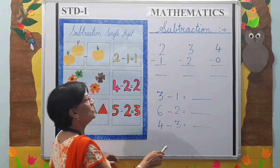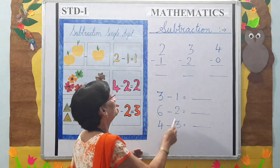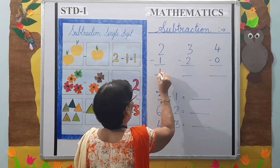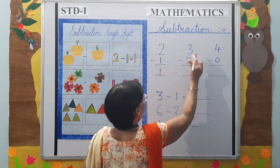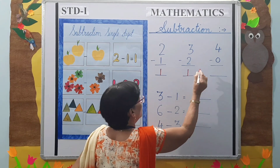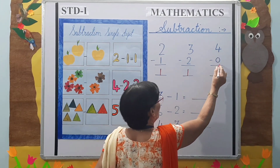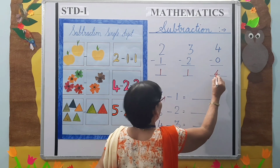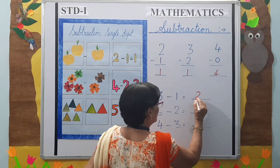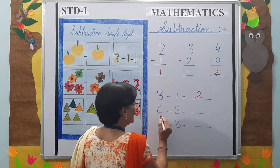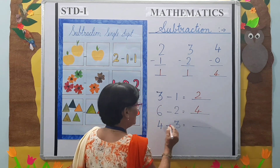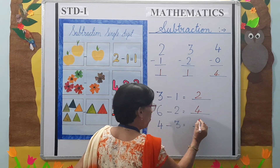Now let's do a few subtraction sums. 2 minus 1 equals 1. 3 minus 2 equals 1. 4 minus 0 equals 4. 3 minus 1 equals 2. 6 minus 2 equals 4. 4 minus 3 equals 1.